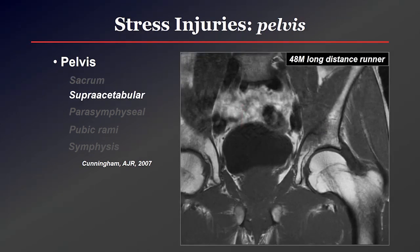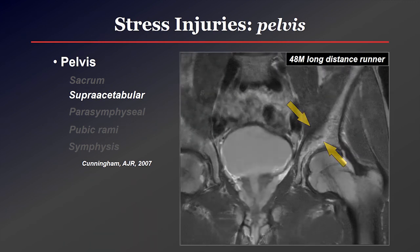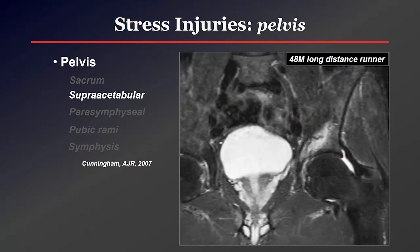In the supraacetabular region, here in a 48-year-old runner, you can see low signal edema on the T1-weighted image. On T2 you'll see a curvilinear fracture line that kind of parallels the superior acetabular margin — classic for these supraacetabular stress fractures, sometimes called an arched eyebrow configuration.